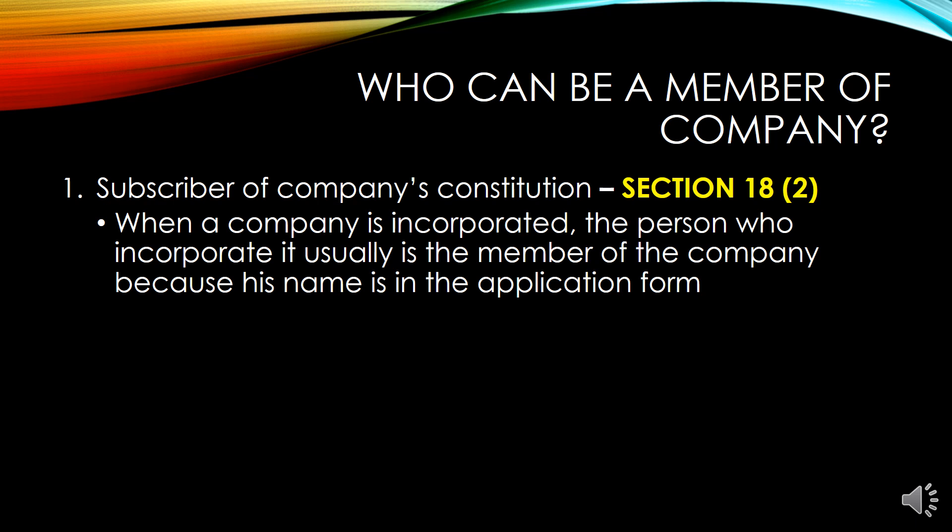The first person who can be a member of the company is the person who incorporated the company — the subscriber of the company — the one whose name is mentioned in the constitution. This is pursuant to section 18, subsection 2. This person is a member of the company. When a company is incorporated, the person who incorporates it is usually the member because his name is in the application form.